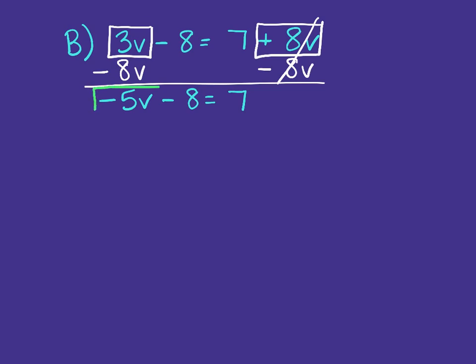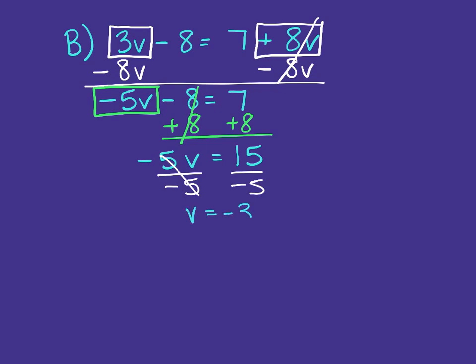And I want to get negative 5V by itself because it includes our variable V and that's what we're solving for. So I'm going to get rid of this minus 8 by adding 8 to both sides of the equation. And the result is negative 5V equals 15. And then last, to get V by itself, we're going to divide both sides by negative 5. So V equals negative 3. Notice that once we got rid of the variable from both sides, this turned into a two-step equation. And so from that point on, it was very familiar.